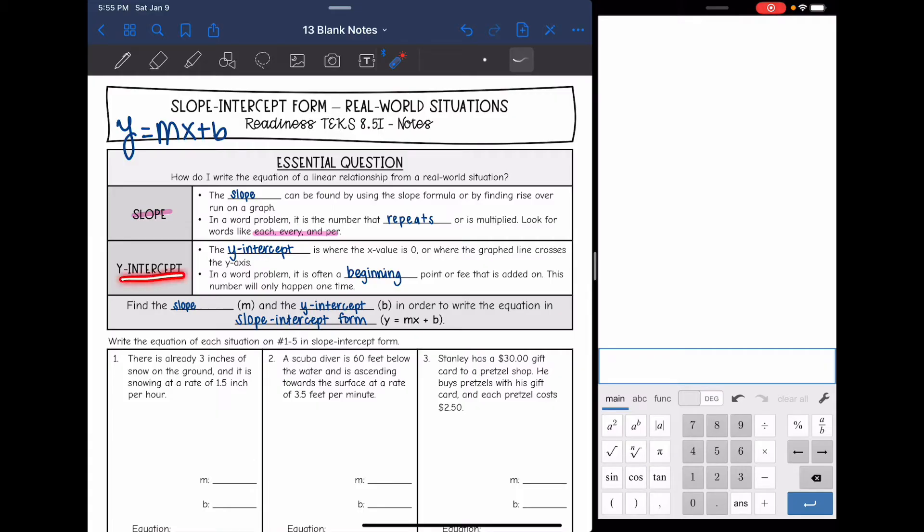Then we will also need to identify the y-intercept. The y-intercept you know is where the x value is zero or where the graphed line crosses the y-axis. In a word problem, the y-intercept is often the beginning point or some sort of fee that is added on. It's kind of extra. This number is only going to happen one time. So after you have the slope and the y-intercept, you can write your equation in slope-intercept form. So let's practice identifying slope and y-intercept from an equation. Remember, slope repeats, and the y-intercept is usually something that just happens one time.